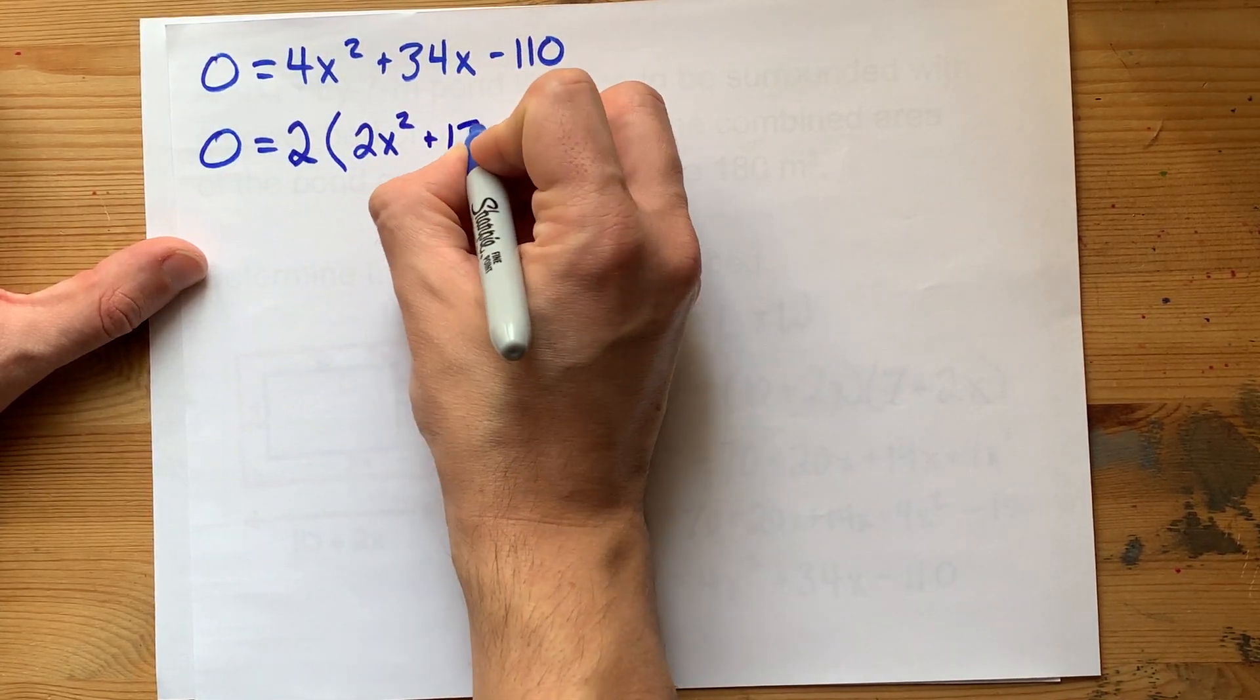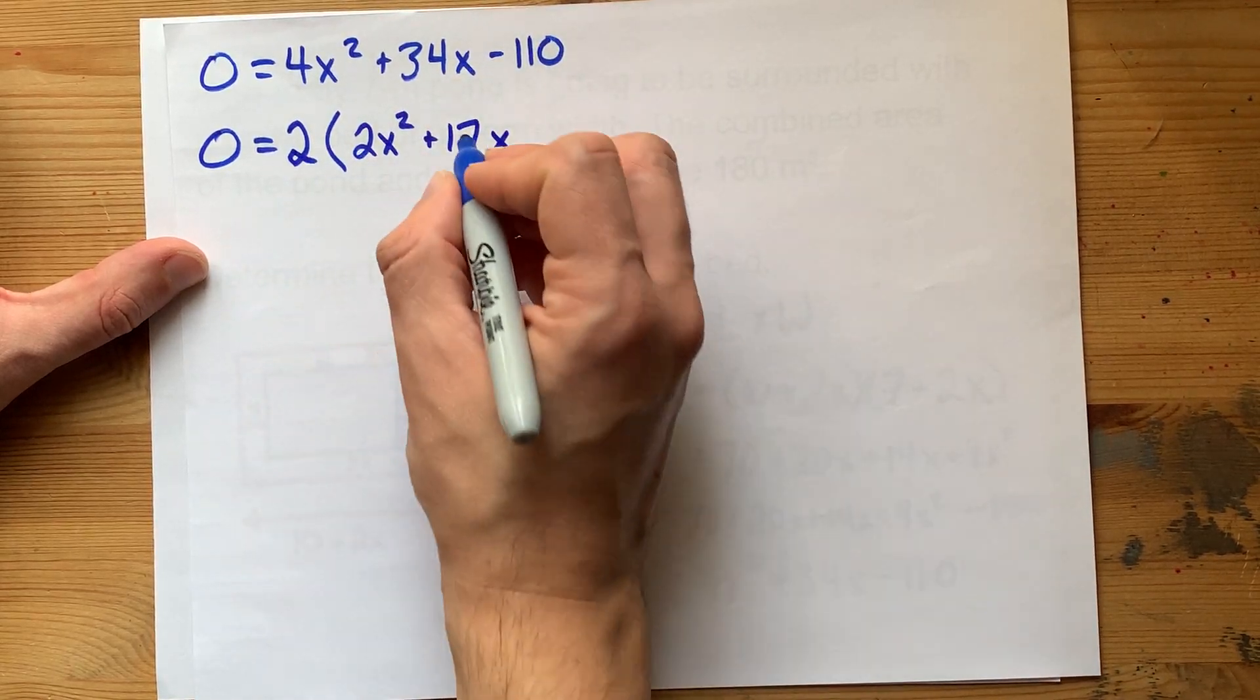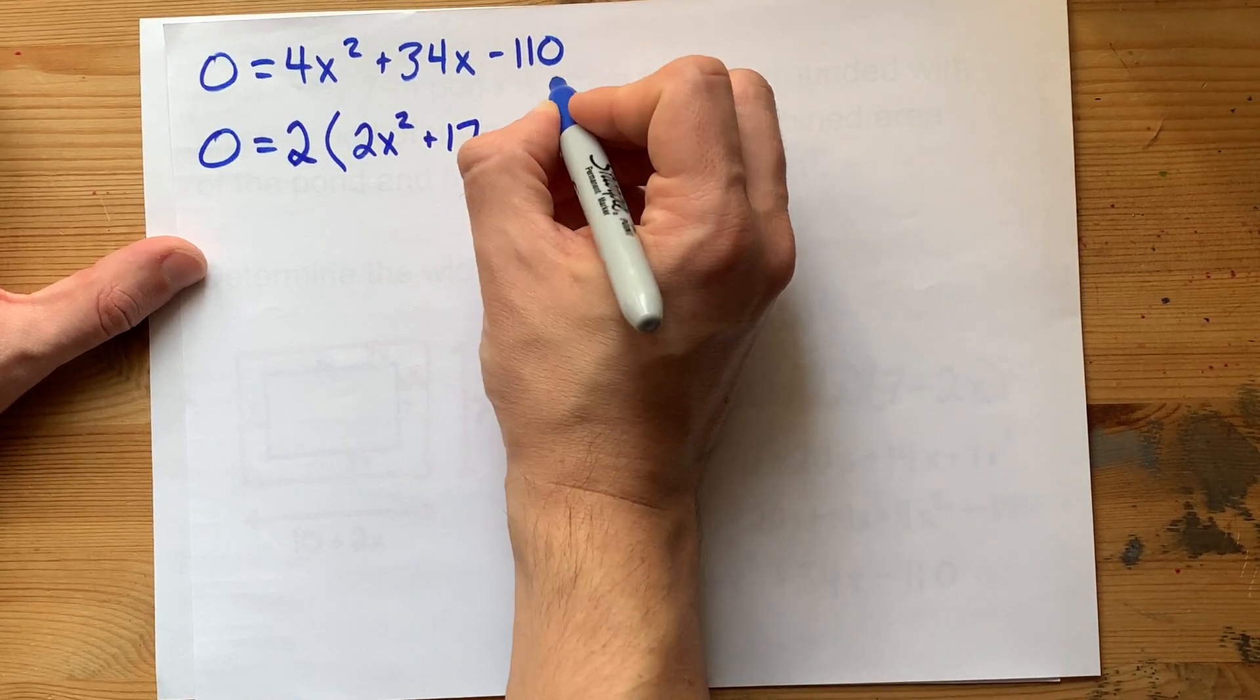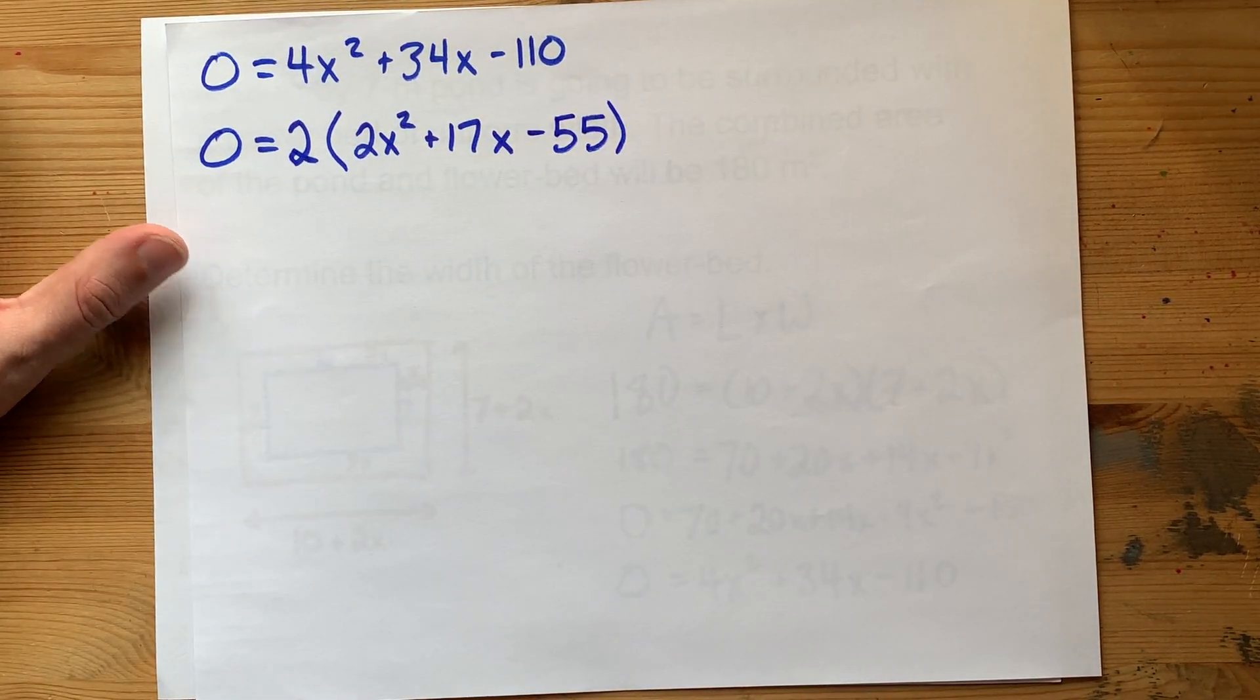So I get 2X squared here. That gives me 17X, because 34 divided by 2 is 17. And this is minus 55, because 110 divided by 2 is negative 55.